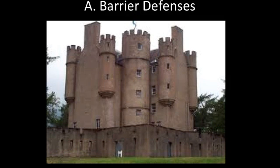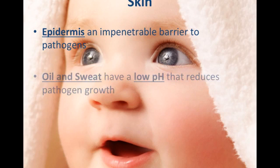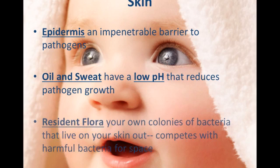Barrier defenses are analogous to the moat and walls of a castle. The top layer of skin, called your epidermis, is impenetrable if it's intact. Oil and sweat are chemical defenses with low pH, and your resident flora — which is your own bacteria — actually competes with invading bacteria for space on your body.